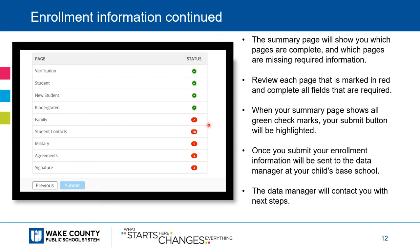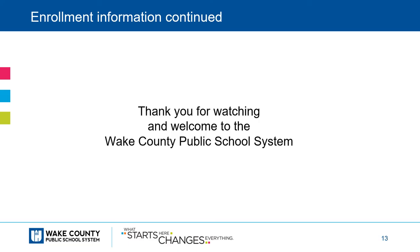An incomplete page will be shown in red with the number of tasks still to be completed on that particular page. Once your enrollment is completed, you will submit that enrollment to the data manager at your child's base school by clicking on the Submit button. The data manager at your base school will contact you with next steps. Thank you for watching this video and welcome to the Wake County Public School System. See you soon.